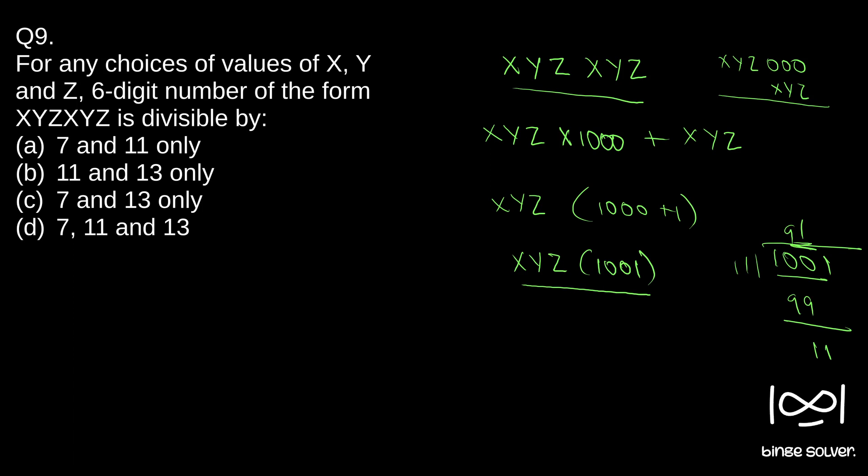We have seven and thirteen here. So ninety-one is nothing but thirteen into seven. Thirteen into seven is ninety-one. So ninety-one is thirteen into seven.